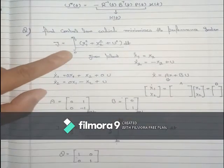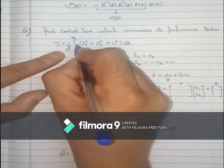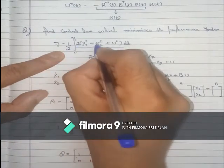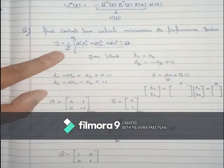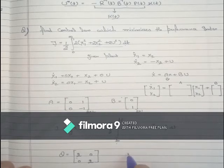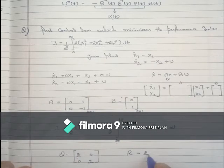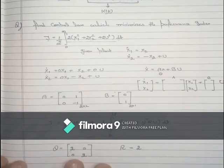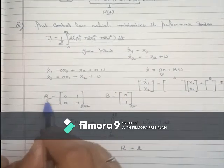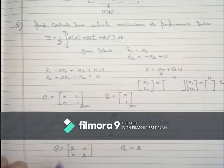Since the standard form has a factor of 1/2 not present in our performance index, we multiply and divide by 2, so the coefficients become 2 and 2. The R matrix coefficient for u is 2. This completes finding the A matrix, B matrix, Q matrix, and R matrix. Note that A and Q depend on time.